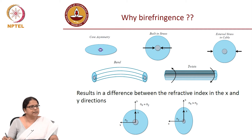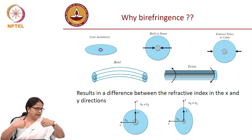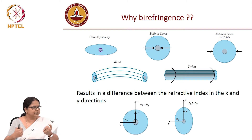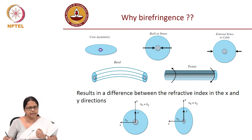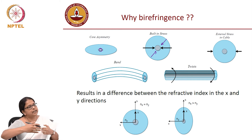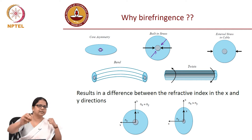There could also be built-in stress — local stress in the glass matrix — and mechanical stress in the fiber. Any mechanical stress in the fiber can change the refractive index, and that stress could be in any random direction. It is not necessary that the fiber is uniformly stressed the same way along its entire length.